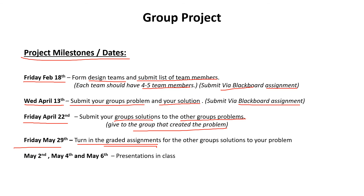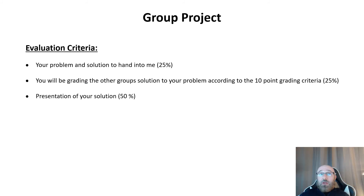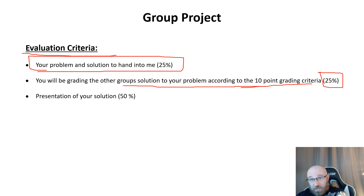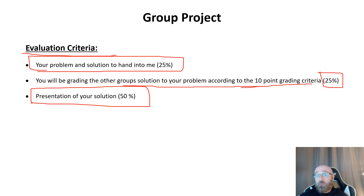The fourth milestone is turning in the graded assignments — you grade all the other team's solutions to your problem and submit those back via Blackboard. The last milestone for the semester is the presentation, done in class, where you present with your group your problem and solution, stepping through each step of the way. For evaluation criteria: your problem and solution handed in this week is worth 25% of the grade; how you do as graded by the other groups is another 25%; and 50% is based on your pre-recorded video presentation submitted to Blackboard.